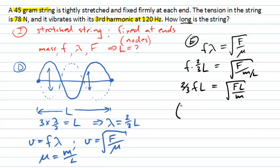Now I can square both sides to get rid of the square root, and in fact I will end up with two-thirds the frequency squared times the length squared on the left-hand side will equal the tension times the length divided by the mass on the right-hand side.